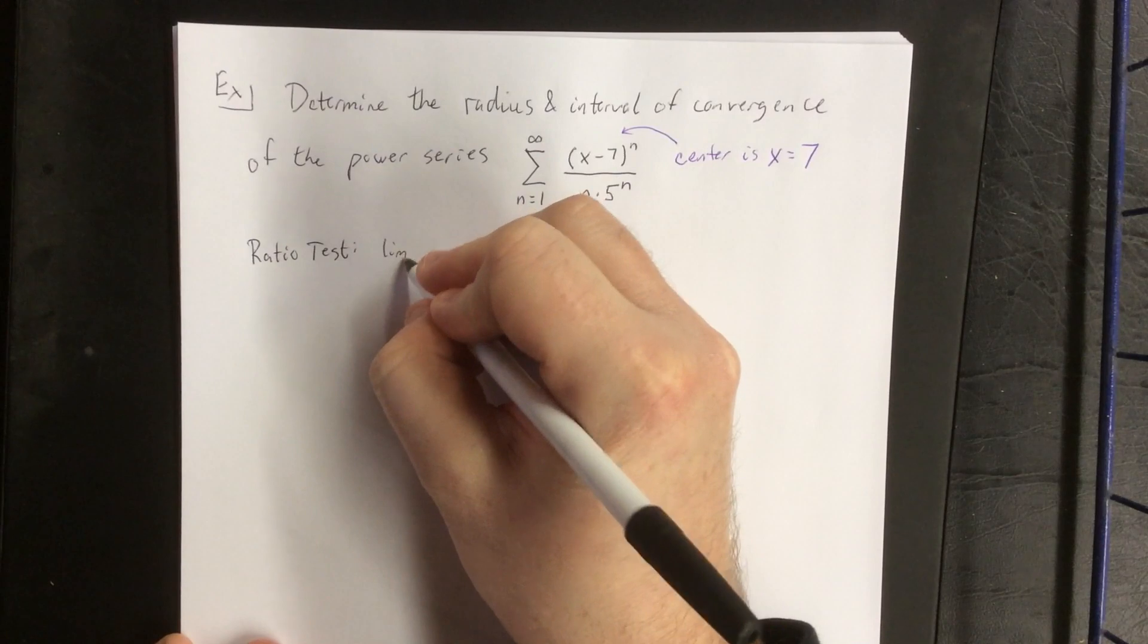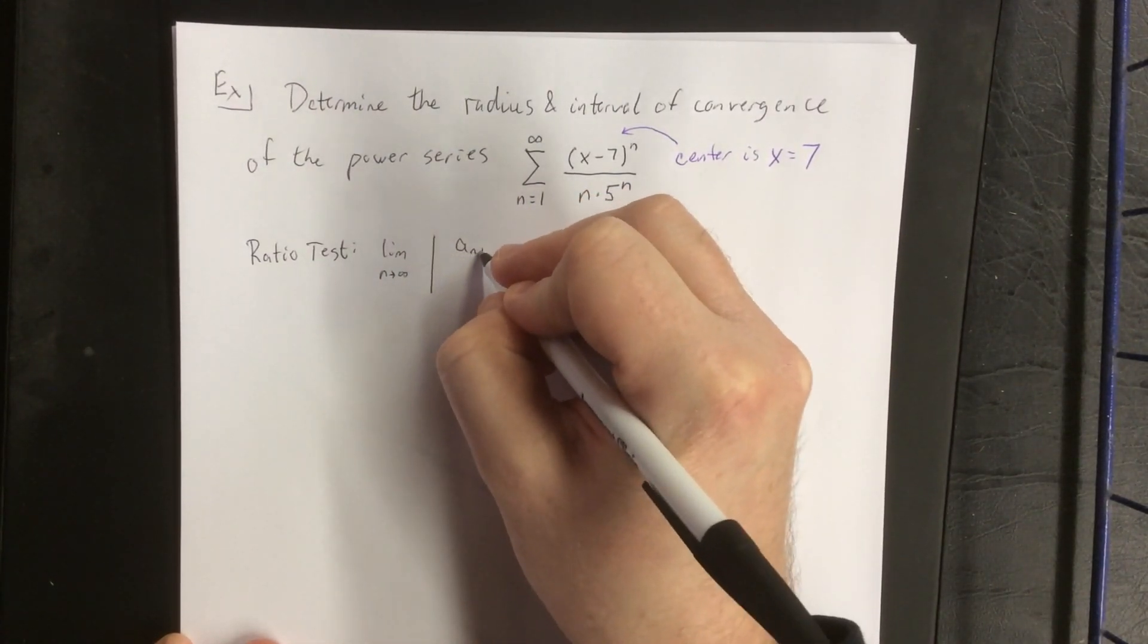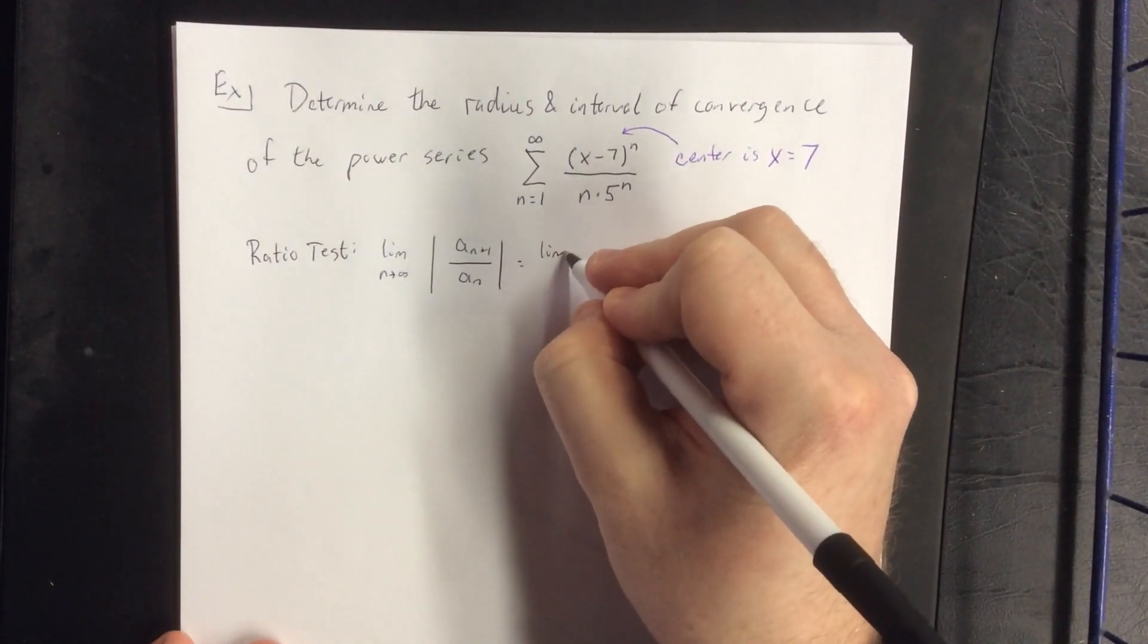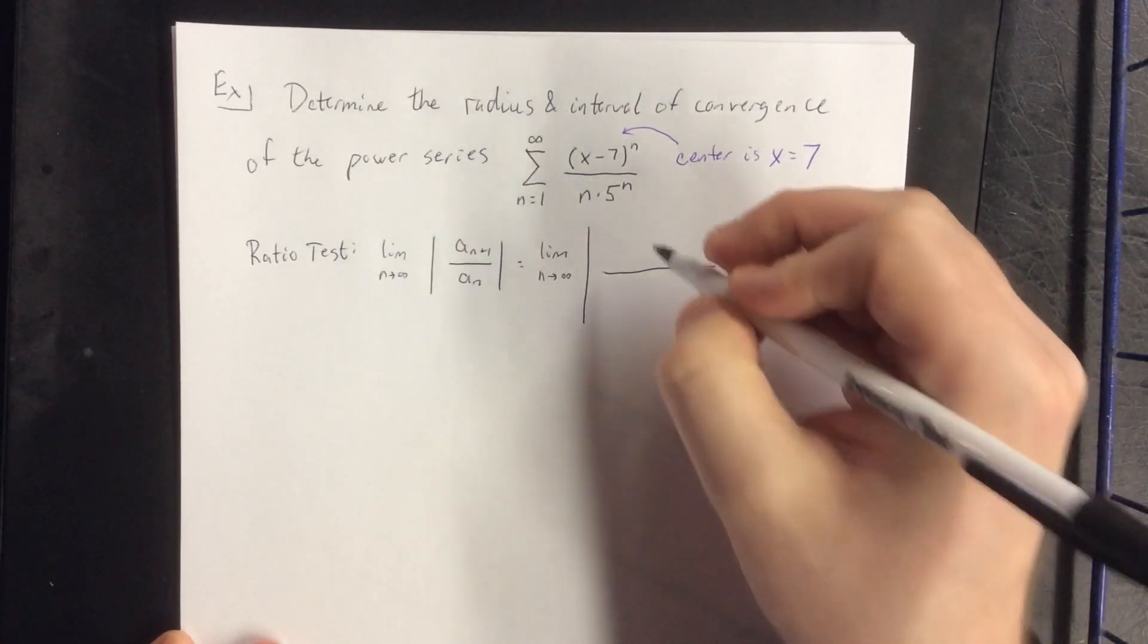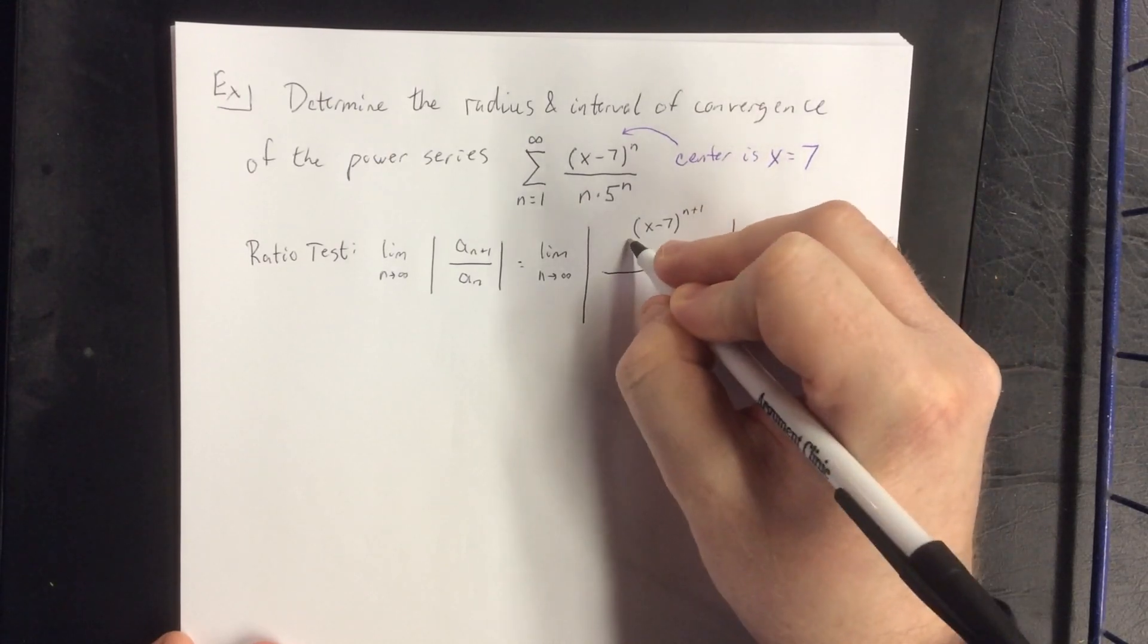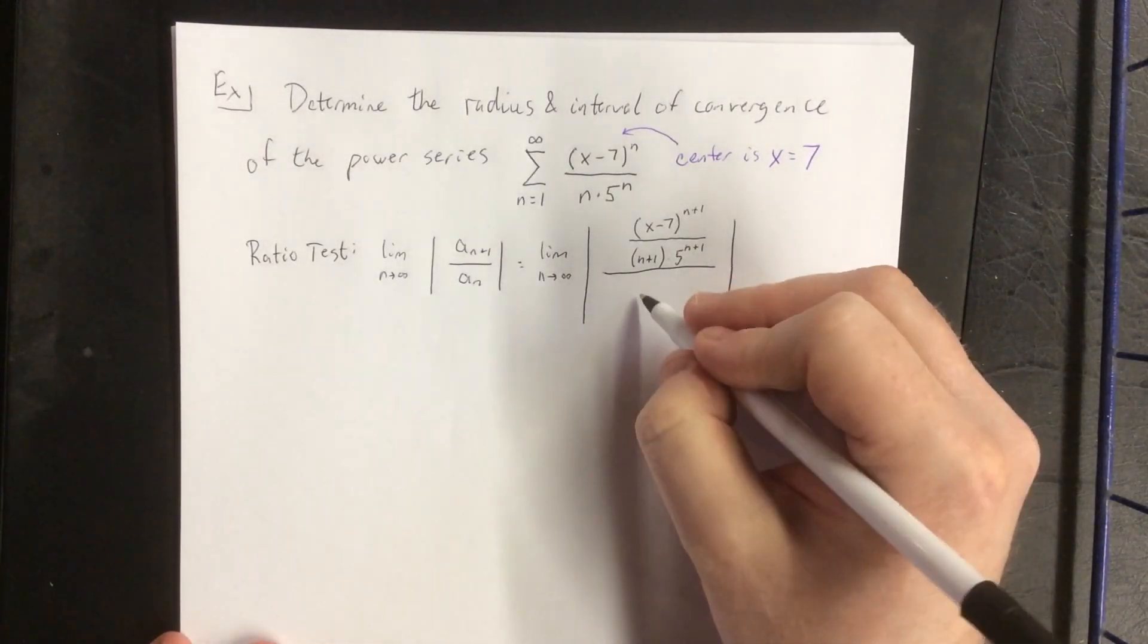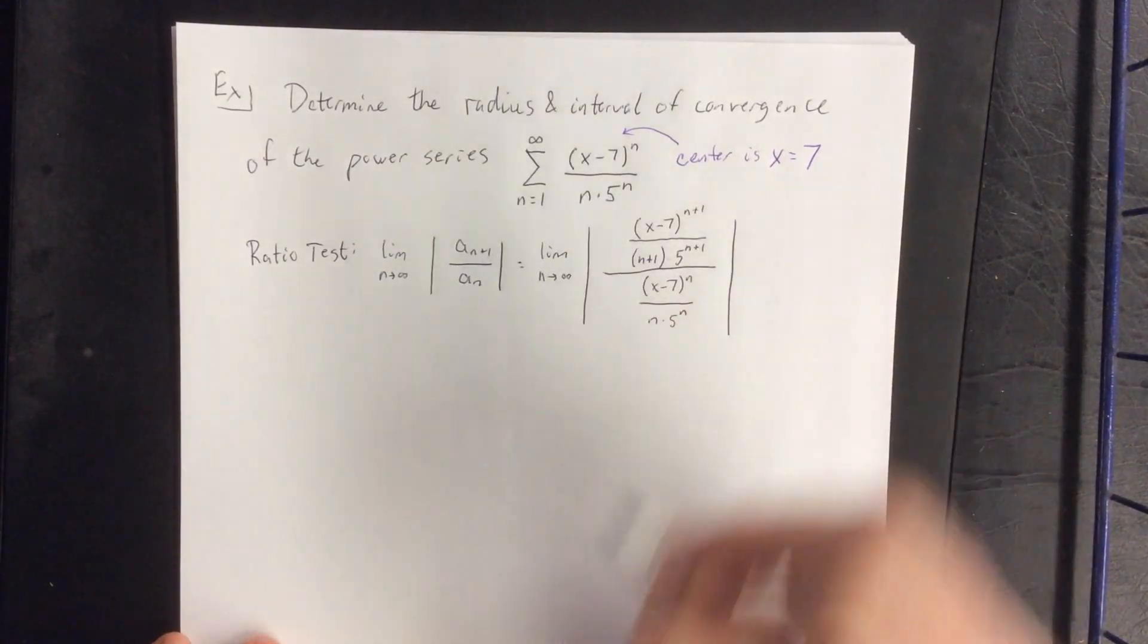According to the ratio test, I'm going to set up the limit as n approaches infinity of the ratio of the n plus 1th term over the nth term of our sequence. Now because it already exists as a fraction, we're going to make ourselves a nice big fraction here. Replacing all of our n's with an n plus 1, this will be x minus 7 raised to the n plus 1 power over n plus 1 times 5 raised to the n plus 1 power. The denominator will simply be the nth term of the sequence.